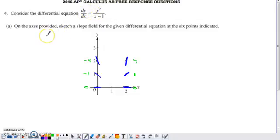In part A, they ask us to sketch a slope field for the differential equation at the six indicated points. To build that slope field, you're going to figure out what the slope of the tangent line to the solution curve is at each of the ordered pairs that are indicated. You're just going to plug each ordered pair into the derivative to generate that slope.